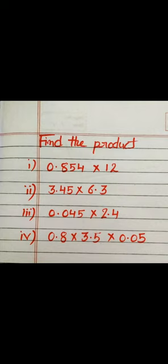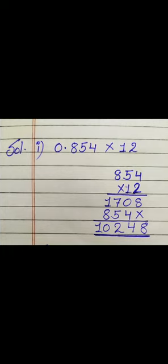As you are seeing, here are a few questions in which we have to find the product. What we will do first — we will multiply the numbers without decimals. As I have done, we will multiply 854 into 12, and we will get 10,248. Now what we will do is mark a decimal in the final result according to the decimal places as in the question.